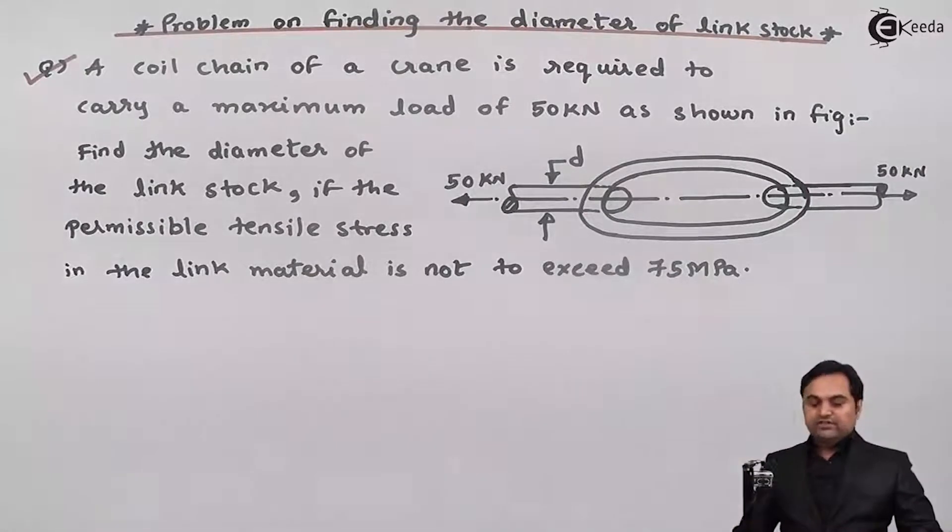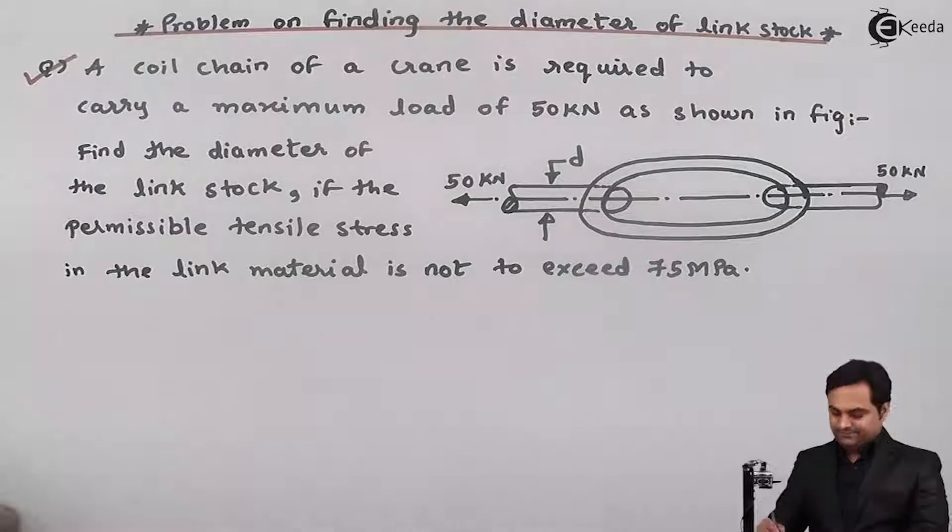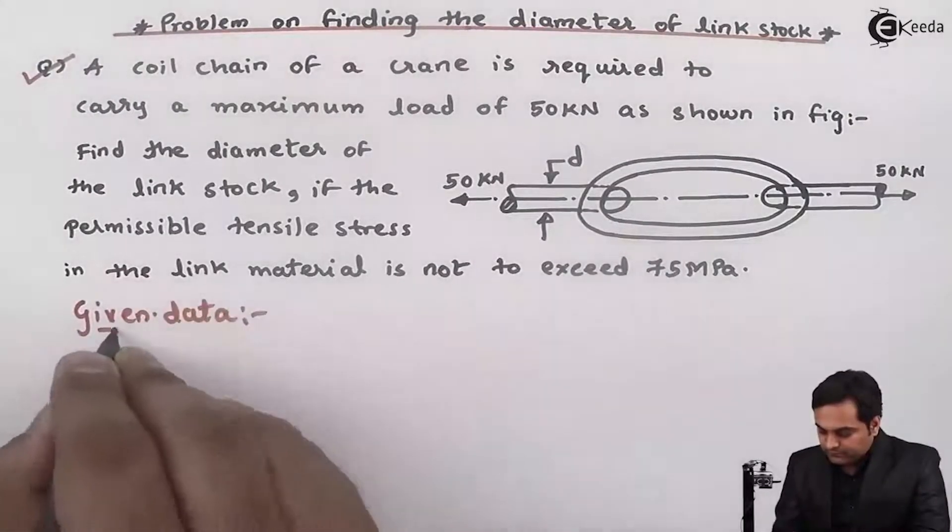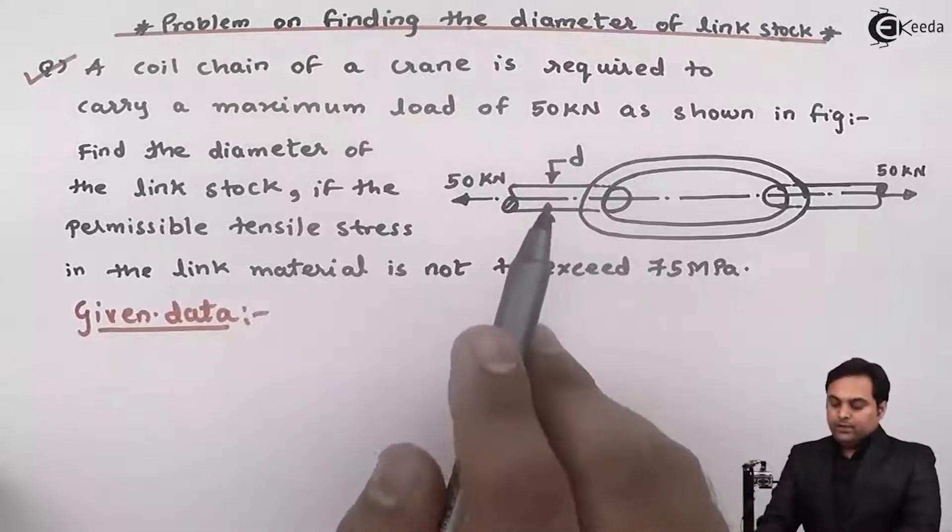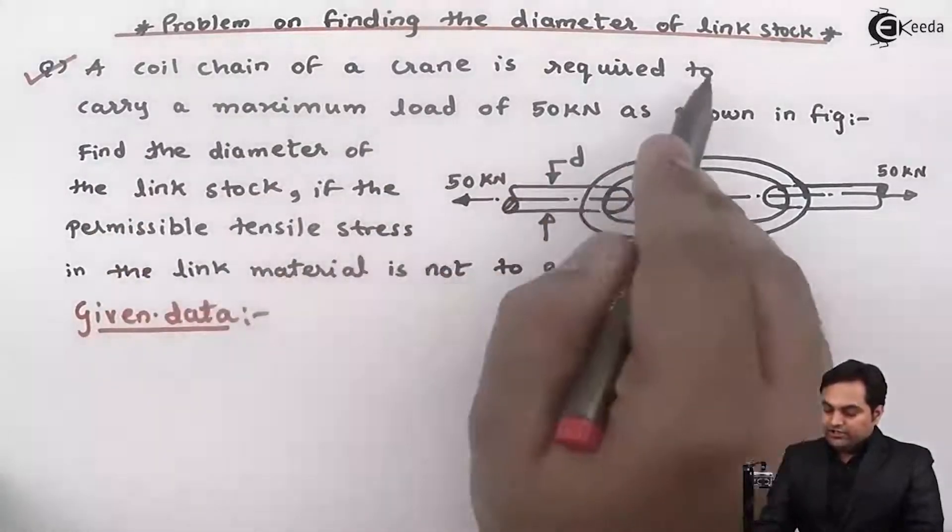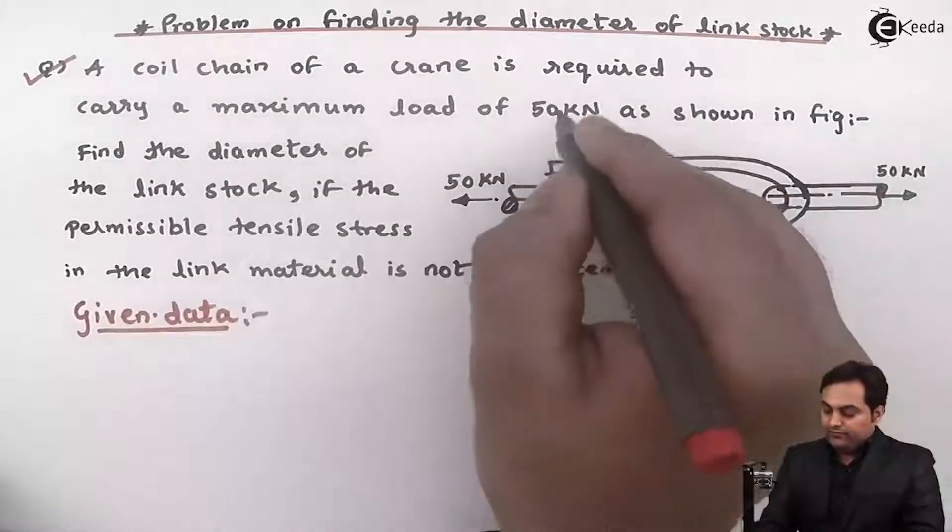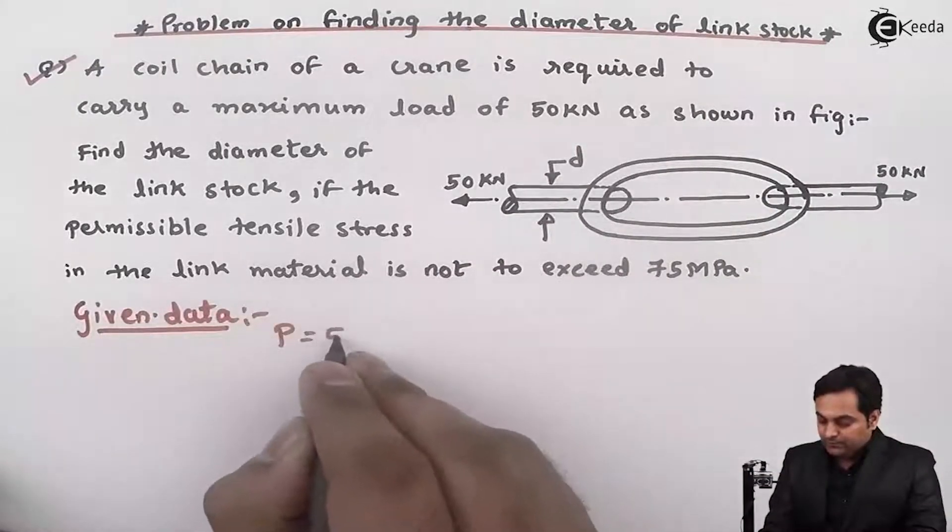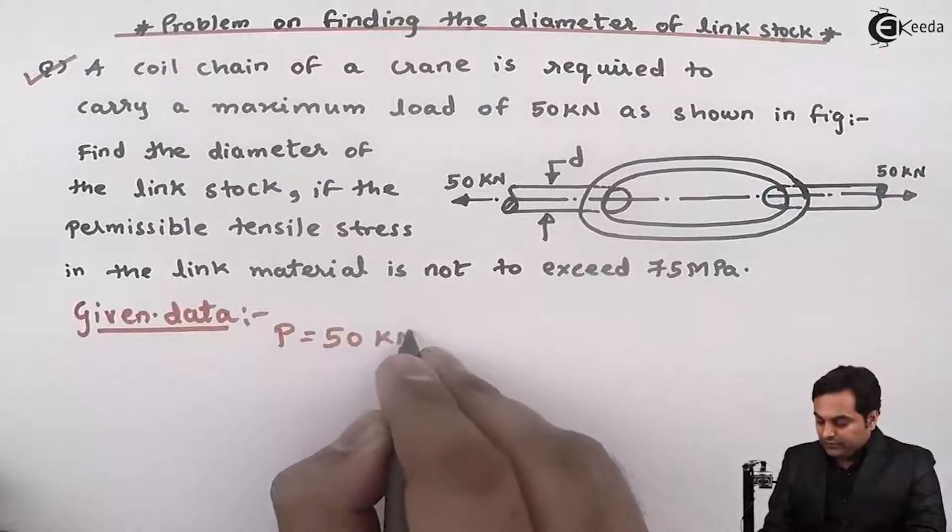So whatever is given here I will write that in the form of data first. Now a coil chain of a crane is required to carry maximum load of 50 kilonewton, load is given, so P is equal to 50 kilonewton.